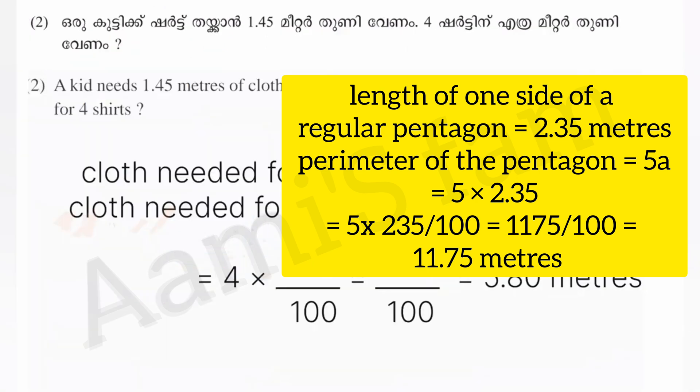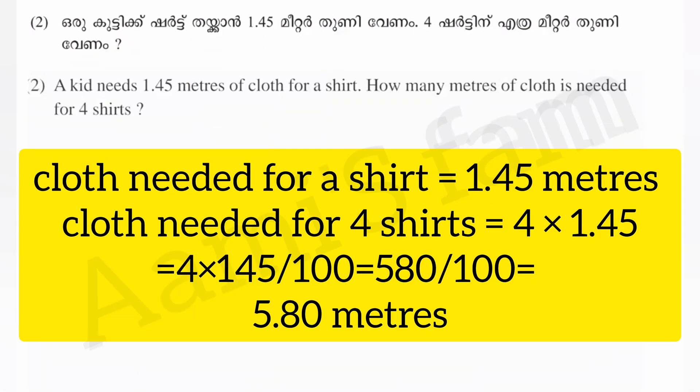Now, if you have a shirt — 1.45 meters. A kid needs 1.45 meters of cloth for a shirt. How many meters of cloth is needed for 4 shirts? Cloth needed for one shirt equals 1.45 meters. Cloth needed for 4 shirts equals 4 × 1.45. We write 1.45 as a fraction: 1.45 equals 145 by 100. Then 4 × 145 by 100. Answer: 4.45 equals 5.80 by 100, which equals 5.80.